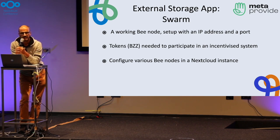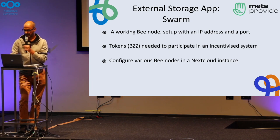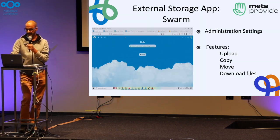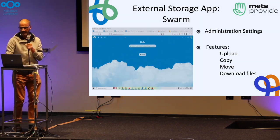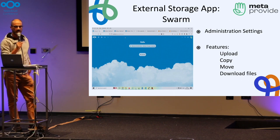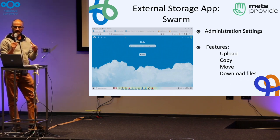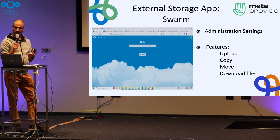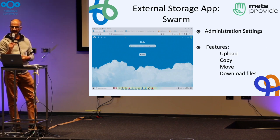Once installed, we need a checkbook — that's a wallet. Since it's tokenized, there's a self-sustainability feature. We need some tokens, and once we have the token set up, we have our decentralized storage accessed privately through Nextcloud. We can configure various storages on one Nextcloud instance.